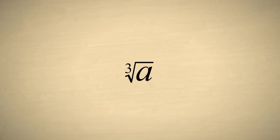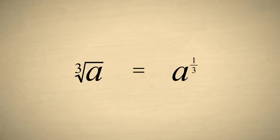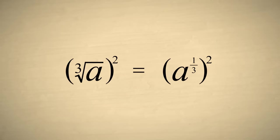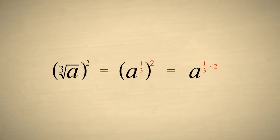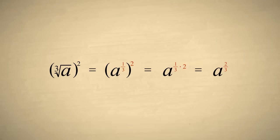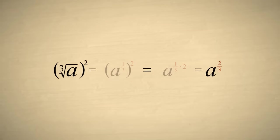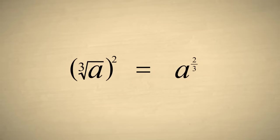To illustrate how this works, let's start with the cube root of a, which can be written as a to the one-third power, and then square it. As we saw in the chapter on raising exponential expressions to powers, we can simplify the expression on the right by multiplying the exponents one-third and two, which gives us a to the two-thirds. So a to the two-thirds represents the cube root of a, squared.